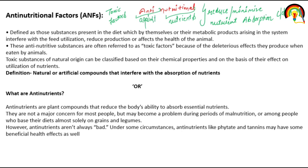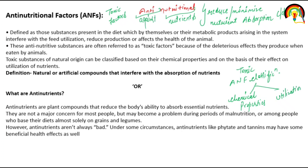Toxic substances of natural origin can be classified based on their chemical properties and on the basis of their effect on utilization of nutrients — that is, how animals are utilizing the nutrients. This is the basis for the classification of anti-nutritional factors.